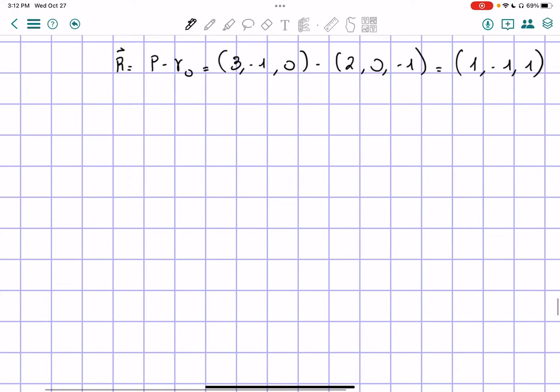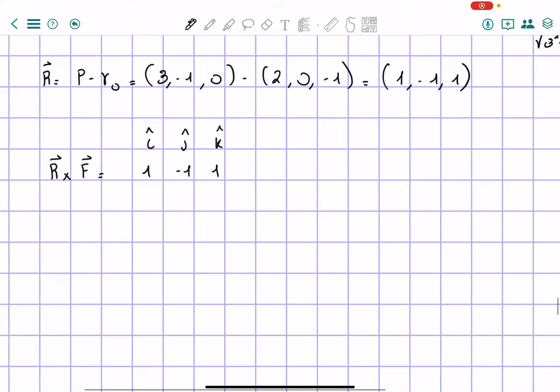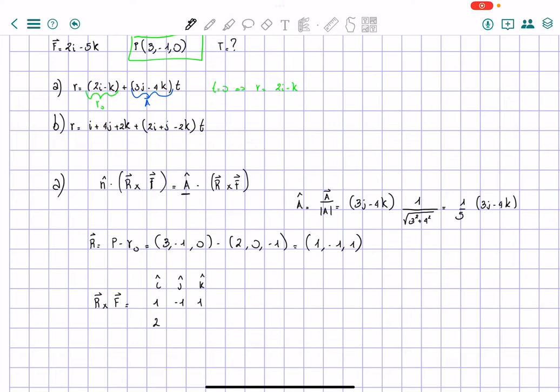So now let's plug everything in. We have r vector cross the f vector, which in this case is going to be, let's find that. I'll write it in i hat, j hat, and k hat direction. So the r we said is going to be equal to 1, negative 1, 1, and the f we said was 2, 0, and negative 5.